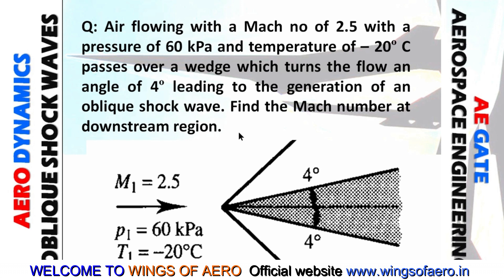In the problem, Mach number M1, P1, and T1 are given, along with the inclination angle. Imagine a horizontal line representing flow direction. The wedge has a total angle of 8 degrees — 4 degrees on each side from the horizontal. However, from the direction of flow, the wedge is deviated by 4 degrees upward. So theta equals 4 degrees. Don't get confused: the wedge angle from horizontal is 4 degrees, which causes the oblique shock.